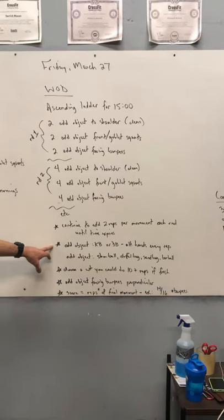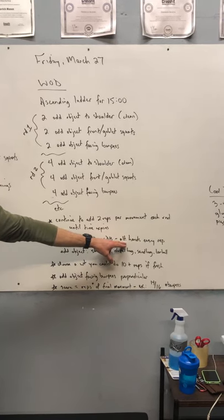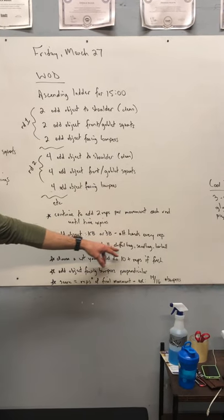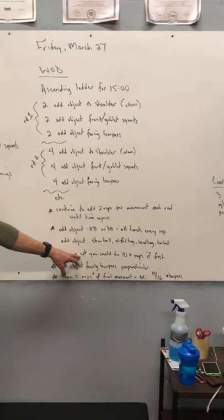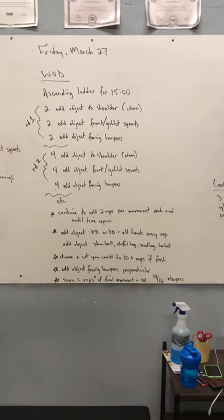Your odd object could be a kettlebell or dumbbell—in which case you're using one hand at a time, alternating hands every rep. It could also be a slam ball, duffel bag, sandbag, or barbell, using two hands doing reps like normal. Pick a weight that you could do ten or more reps of any one of these movements if you were fresh.